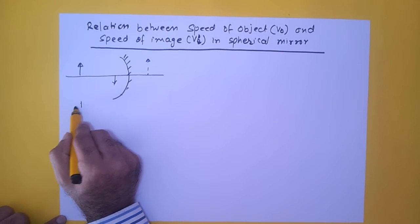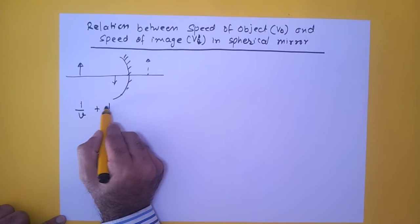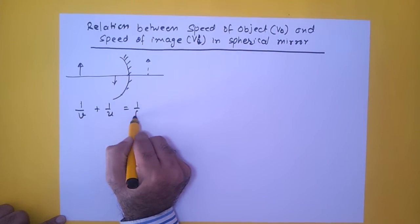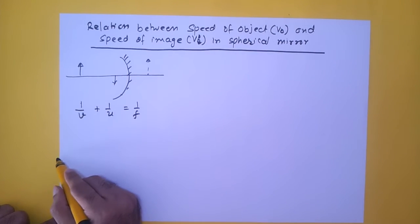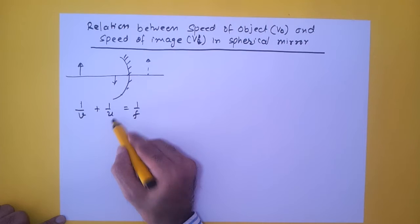Let us begin with the equation of mirror equation: 1 upon v plus 1 upon u is equal to 1 upon f. V and u, as you know, are distances. This is the distance of the image, this is distance of the object.